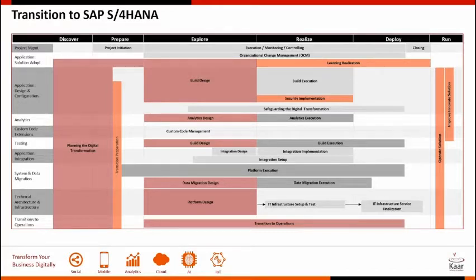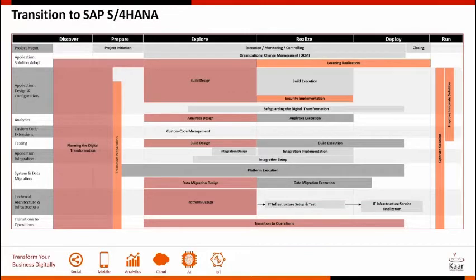S/4HANA has embedded analytics, so you need to understand what analytics you currently have and how you can leverage the embedded analytics available in S/4. For custom code extensions — and I cannot stress this enough — existing custom code must be adjusted to function properly with S/4HANA. The steps involved are: cleanup of unused custom code, identification of affected custom code, planning and execution of necessary adjustments, optimizing code to leverage the full power of HANA, and exploring SAP S/4HANA key user extensibility tools and the SAP Cloud Platform for extensions.